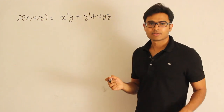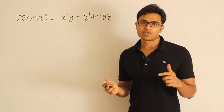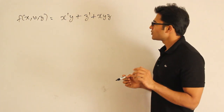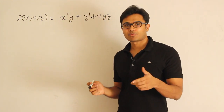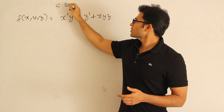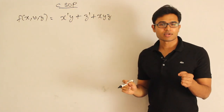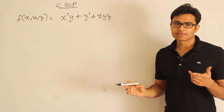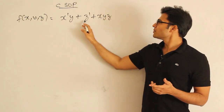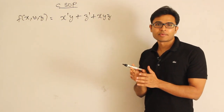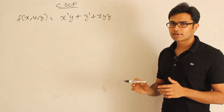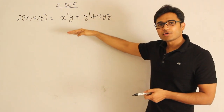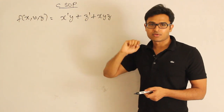Given this expression, how can you convert it into canonical form — either product of sums or sum of products? Let's convert it to canonical sum of products, meaning we want minterms. It is a sum of products but not canonical because every term should be a minterm, meaning all variables must be present in every term. There are two ways to solve this.